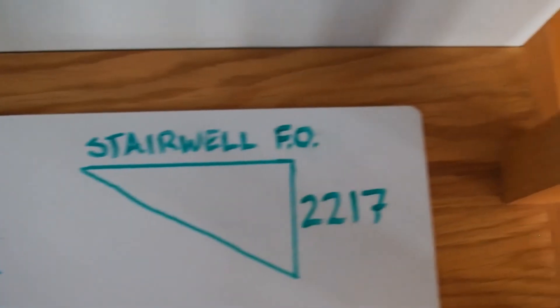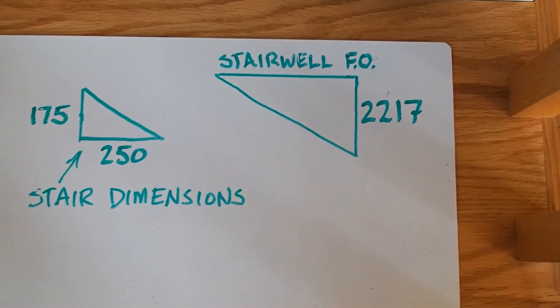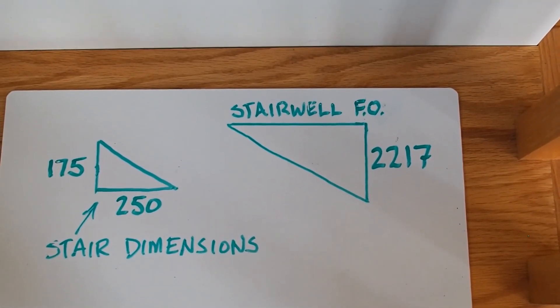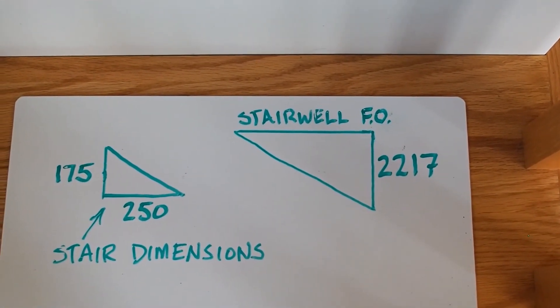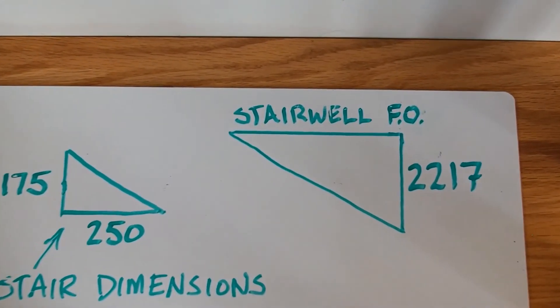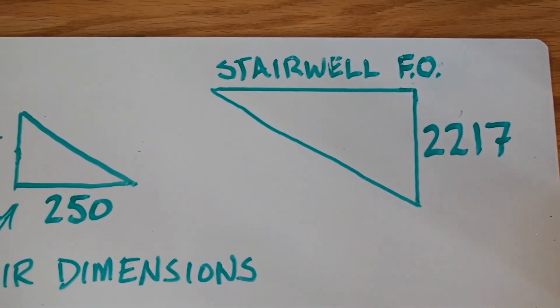If you add 267 to 1950, you get 2,217. So now I have my two triangles. I got my stair, and I just picked typical stairs: 175 for the unit rise and 250 for the unit run. And I'm trying to find the stairwell finished opening.